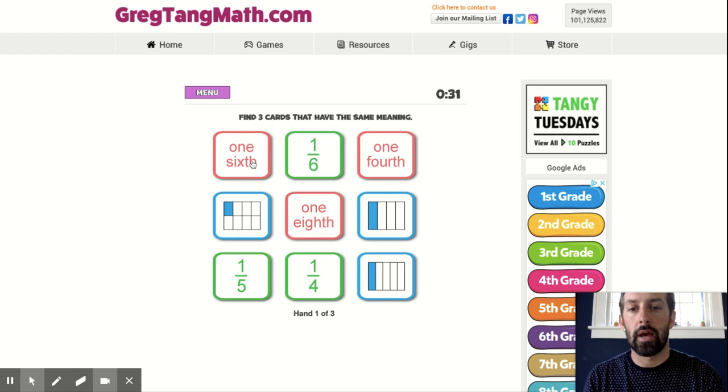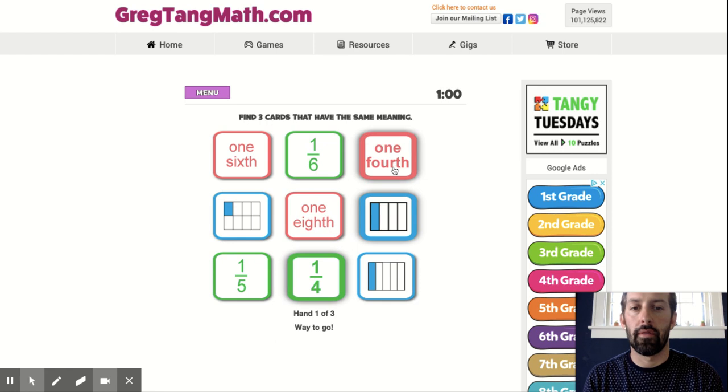So what I like to do is I start with a color. I start with blue and I look and I see one blue out of eight, so that's one eighth. Then I look for the green to see if there's a fraction written. I don't see one eighth, so I know that can't be the one that has three cards that match. What about one out of four? One fourth. Here's the fraction one fourth. And last, can I find pink? One fourth. There it is.